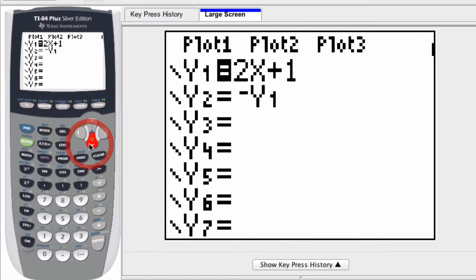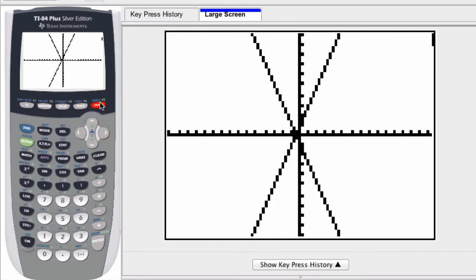If I want to select a function, I scroll to the equal sign and press enter. Now that it's also shaded in, both of these functions are selected, and I press graph and I can see both of them.